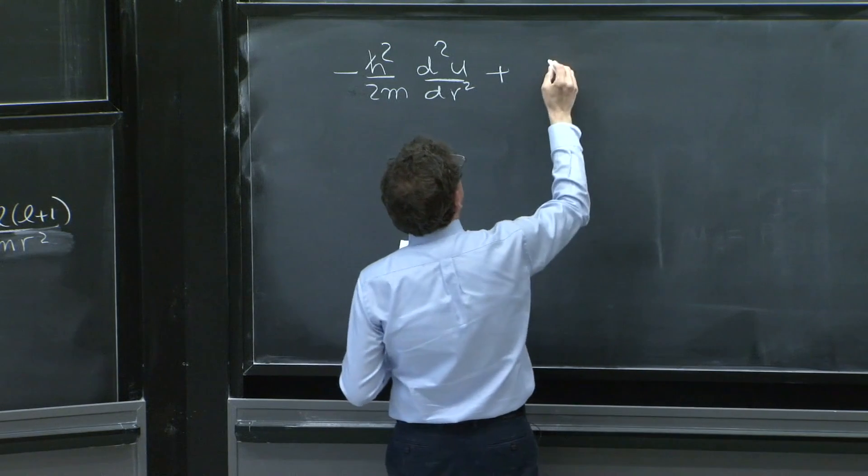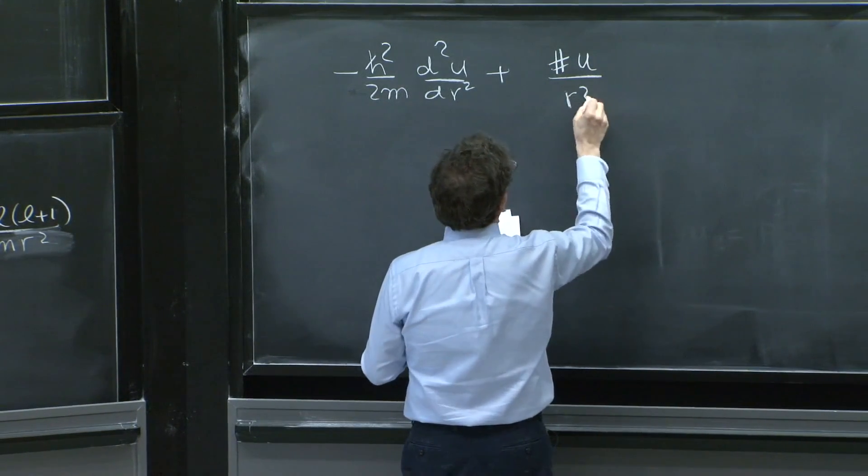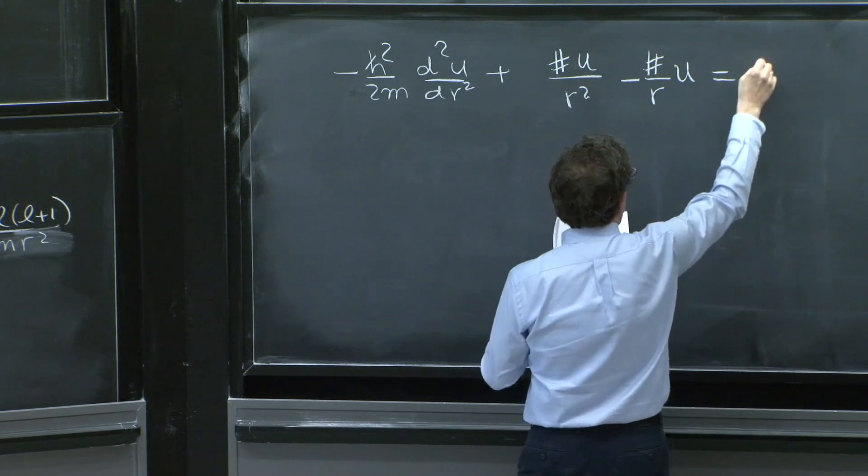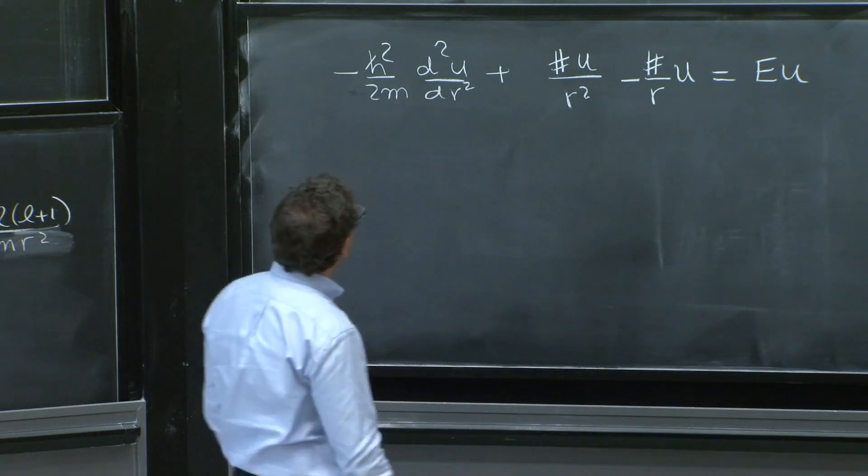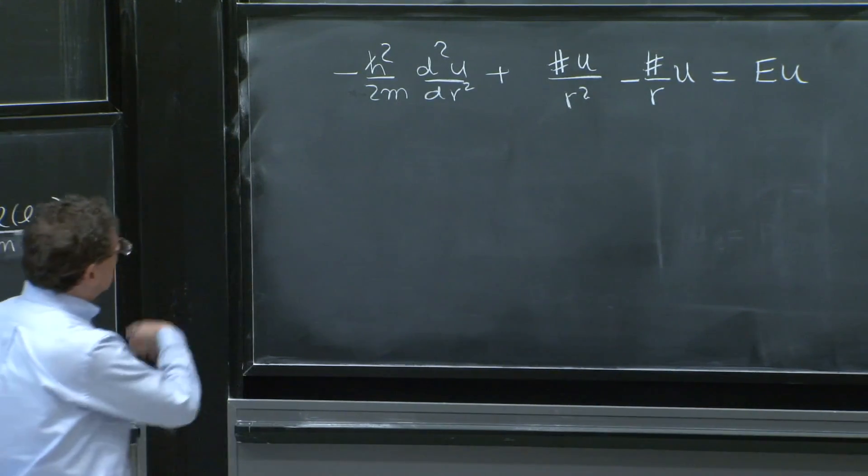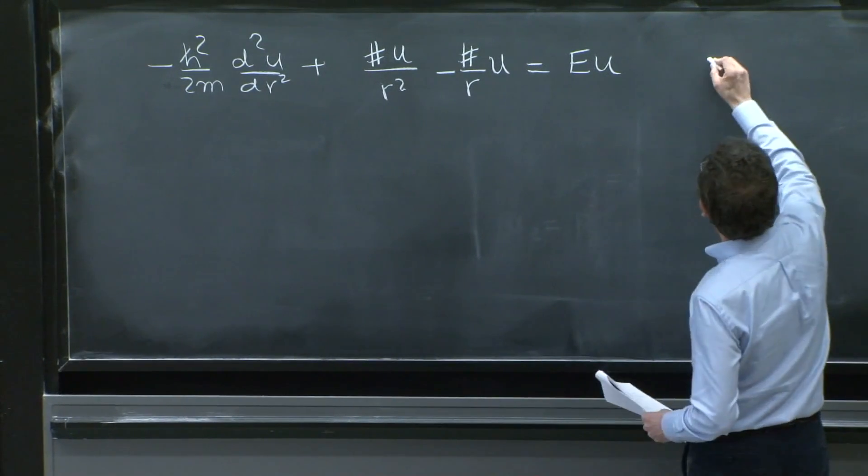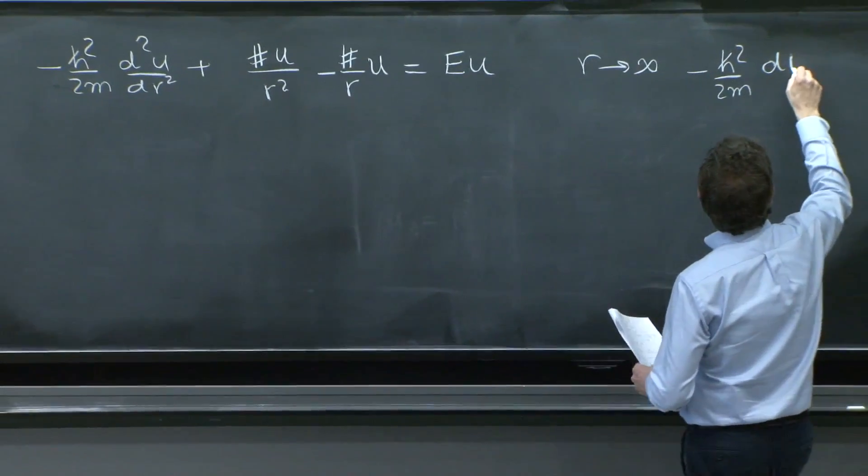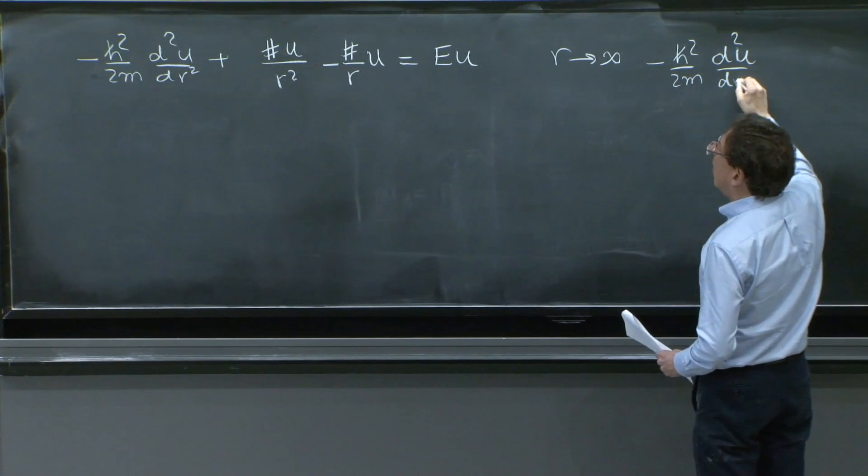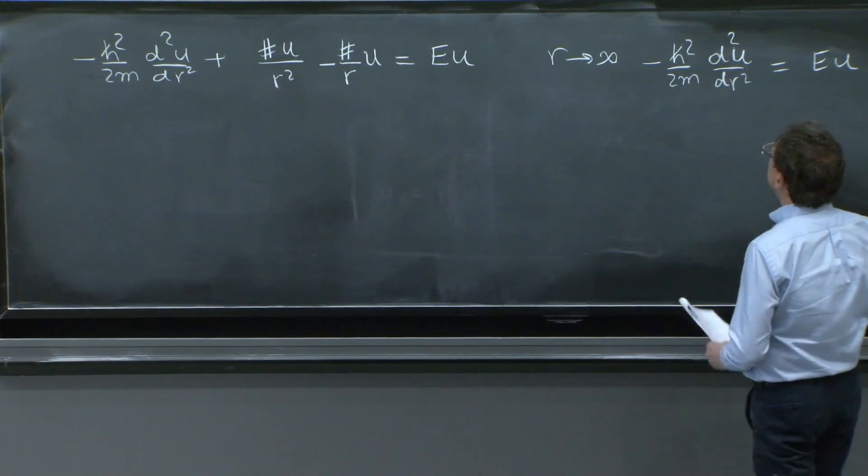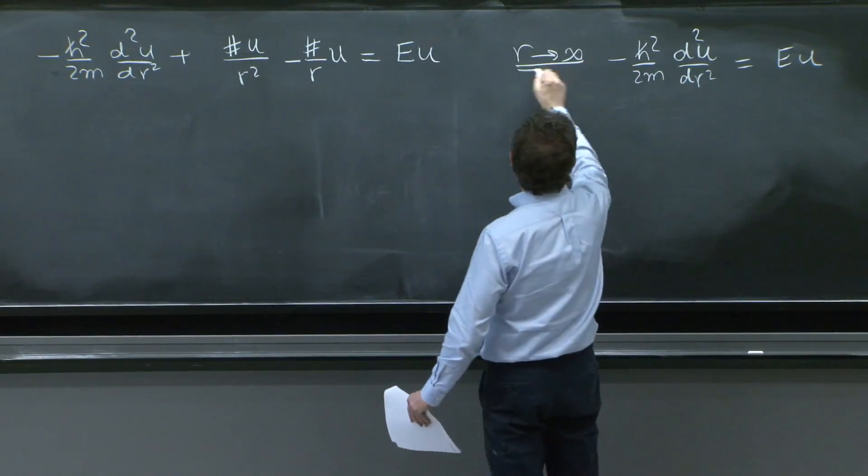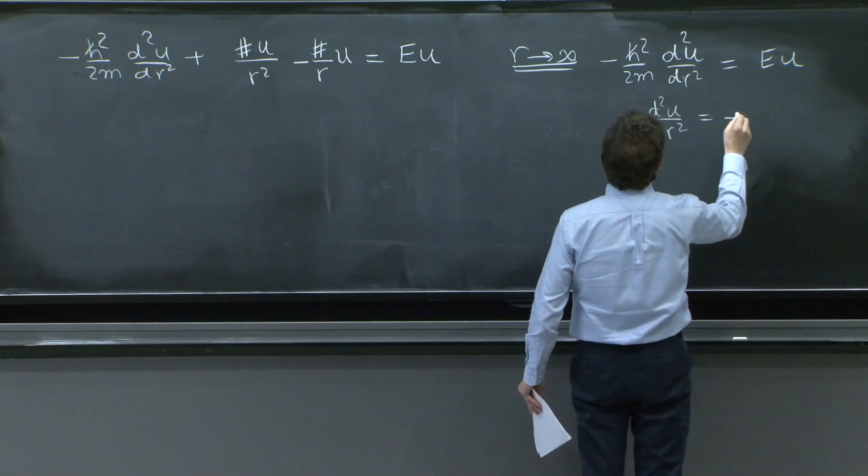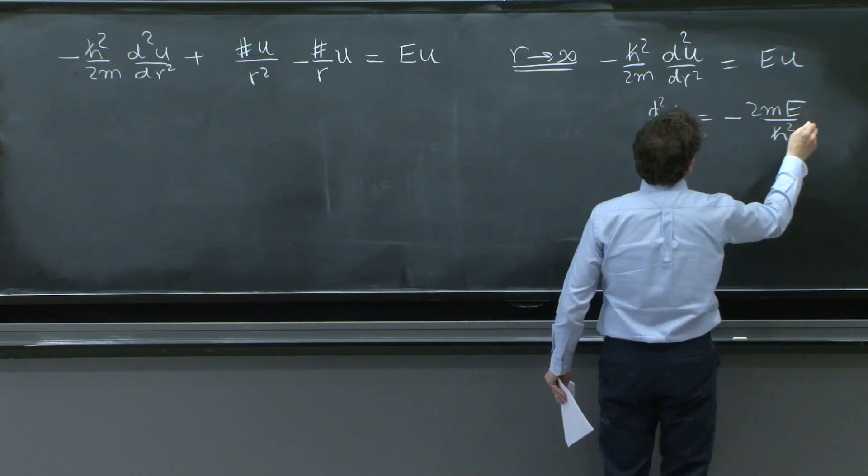You have minus h squared over 2m d second u dr squared plus some sort of number. You don't care how much. u over r squared in the effective potential minus some number over r times u is equal to e u. This was your radial differential equation. And as r goes to infinity, you get minus h squared over 2m d second u dr squared is equal to e u, roughly. That's the key terms. And from here, d second u dr squared is equal to minus 2m e over h squared u.